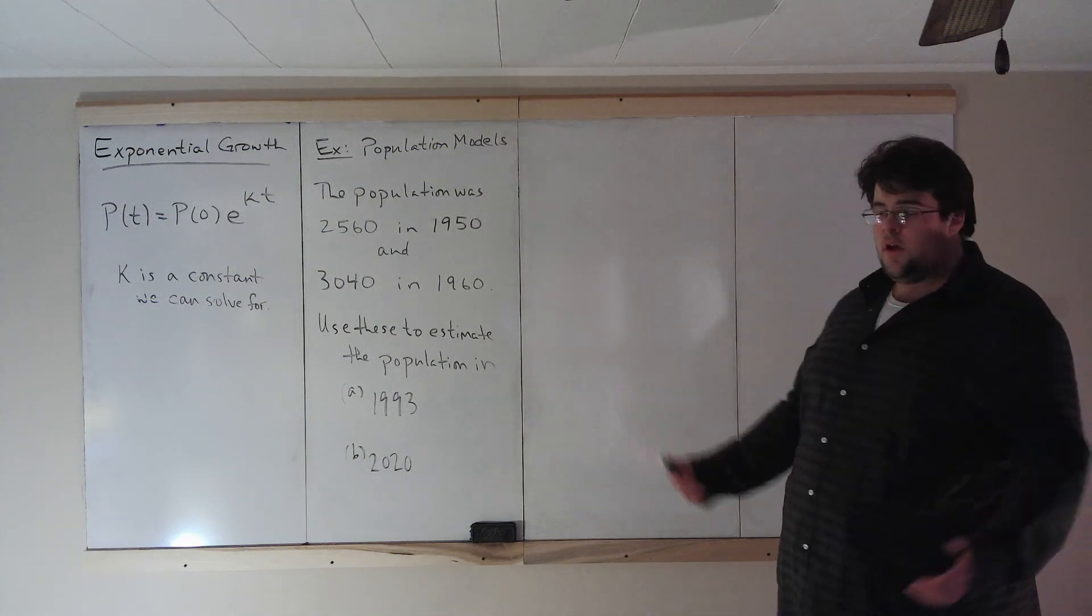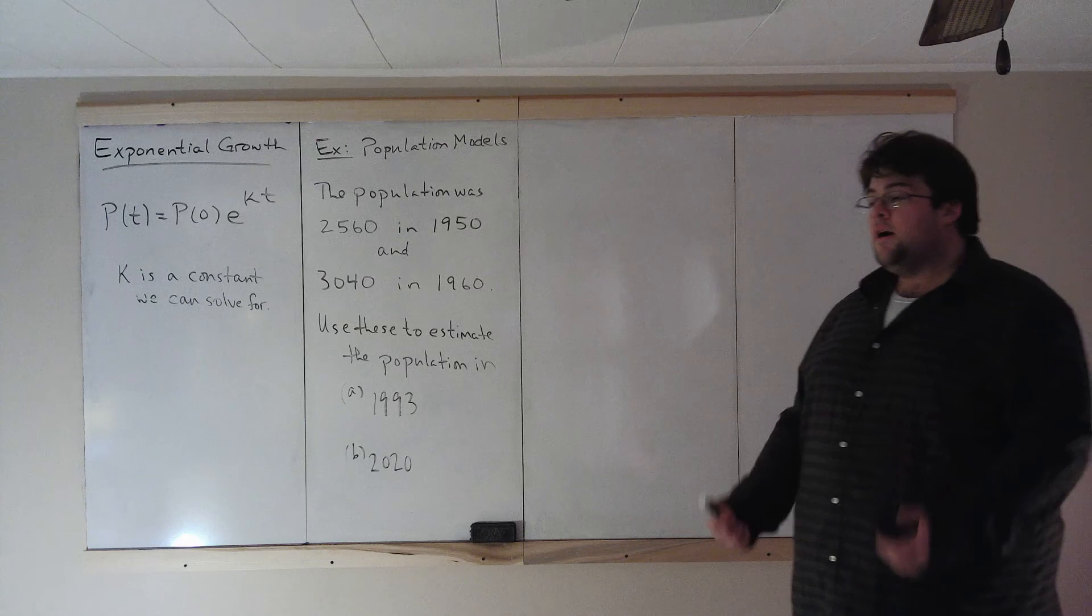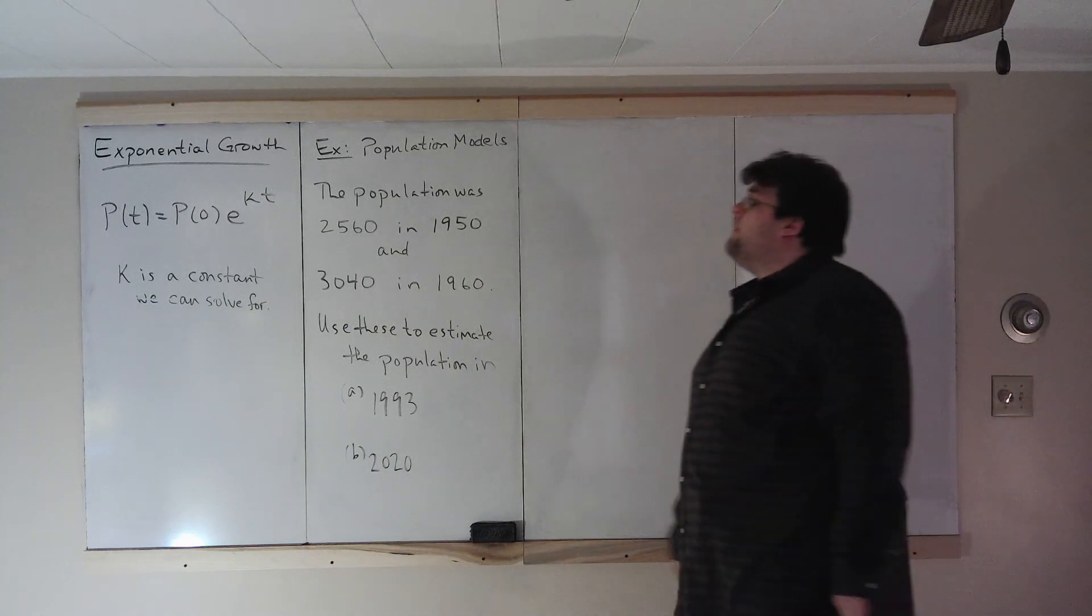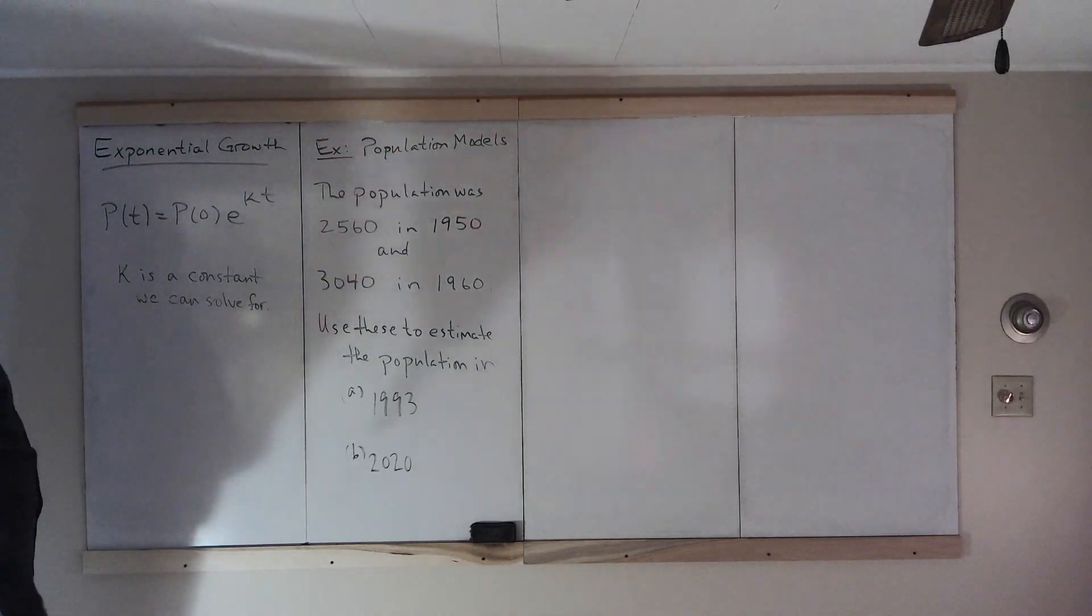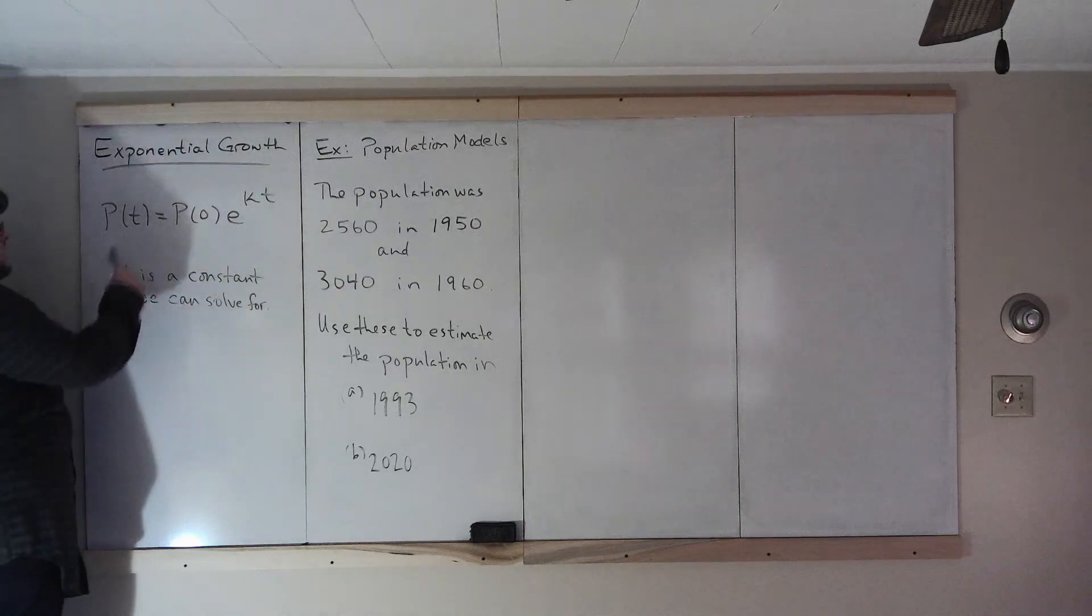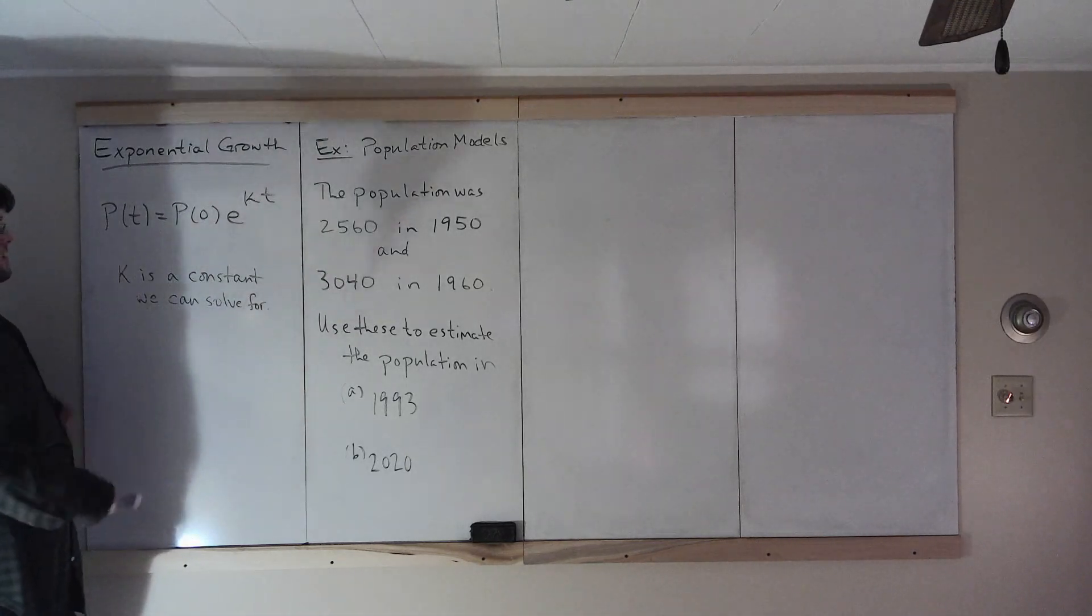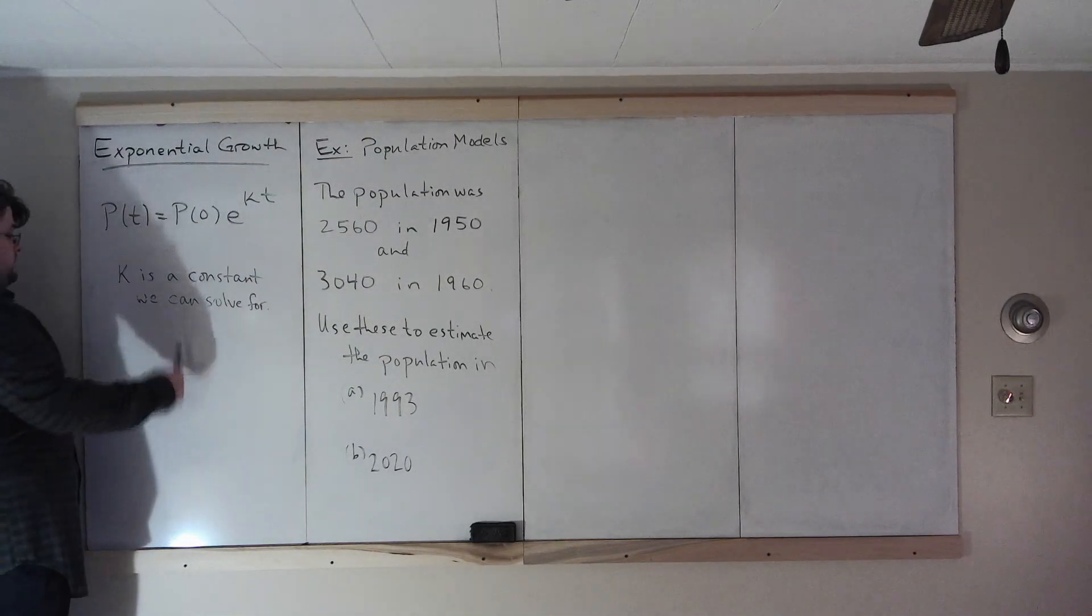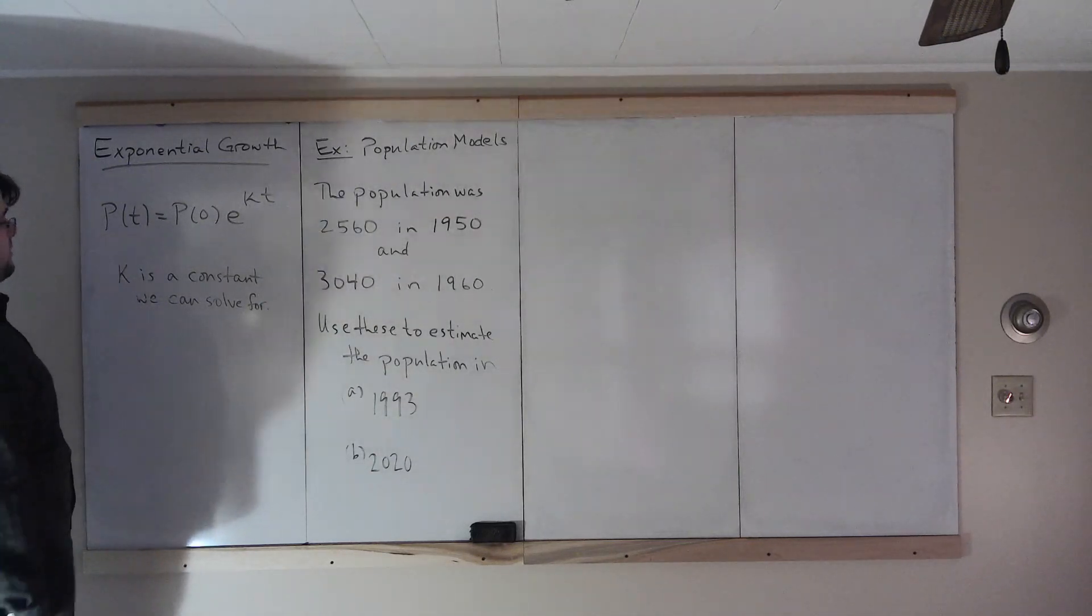We discussed last week continuous compound interest. Now, the model that models continuous compound interest models other kinds of growth as well, and we're going to look at three other types of exponential growth. A general equation when a quantity grows at a rate proportional to its size is that P(t), here P is a function which measures a quantity at time t, equals P(0), a base quantity, times e to the kt. e is the exponential function, k is a constant, and we'll see that we can use some information to solve for this constant, and t is time in whatever time units I want.